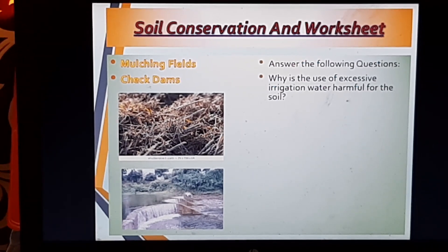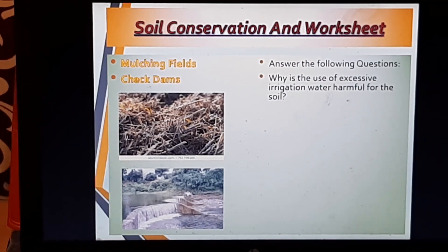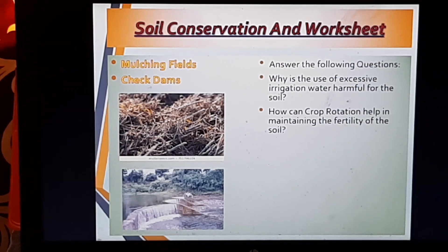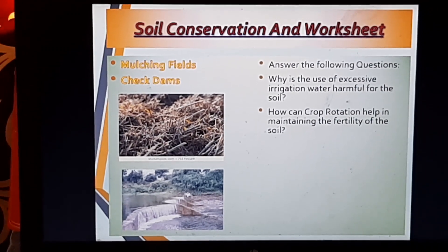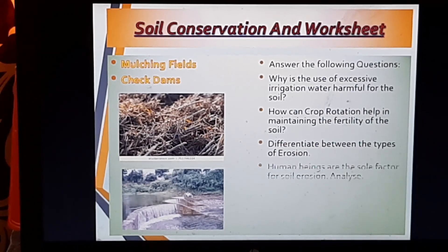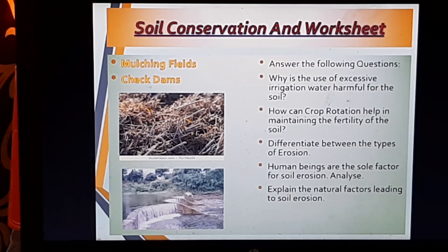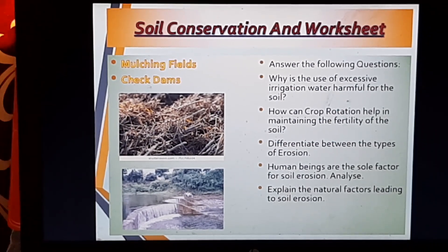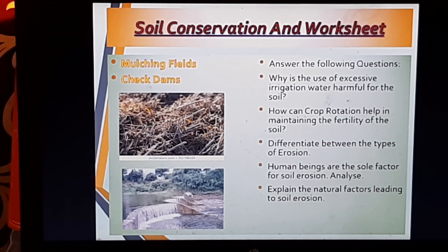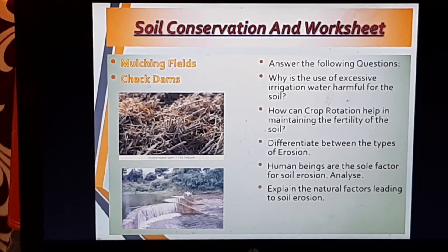There are some worksheet questions related to the topic: number one, why is the use of excessive irrigation water harmful for the soil? Number two, how can crop rotation help in maintaining the fertility of the soil? Number three, differentiate between the types of erosion. Number four, human beings are the sole factor for soil erosion — analyze it. And lastly, explain the natural factors leading to soil erosion.